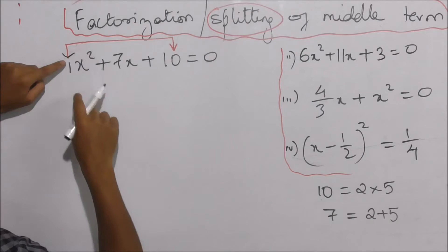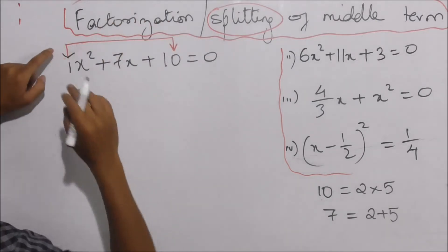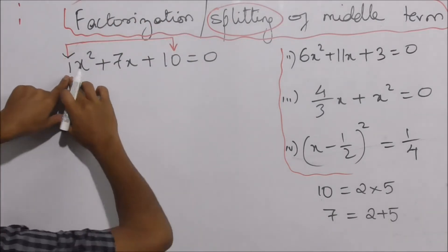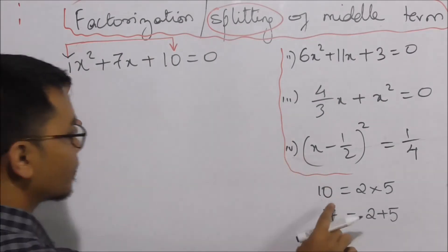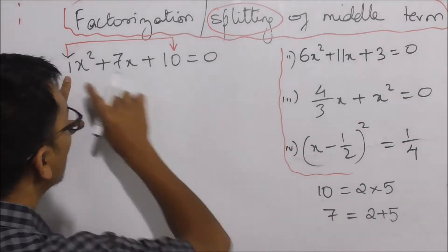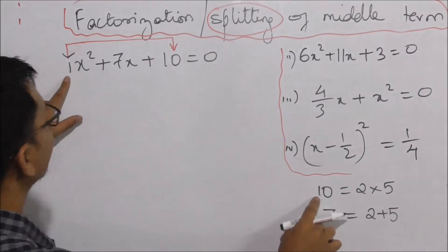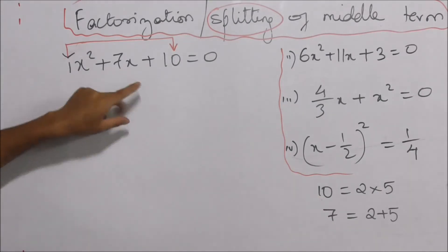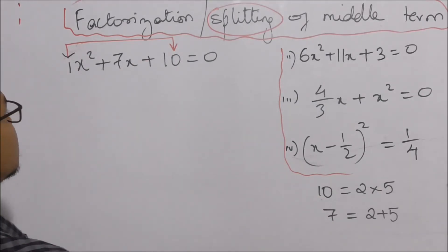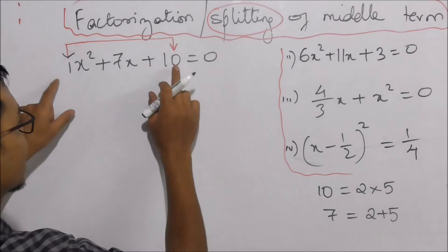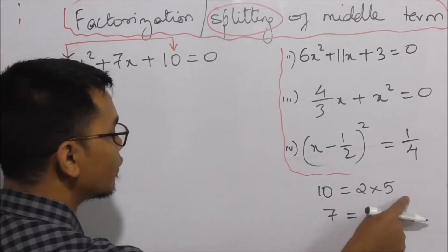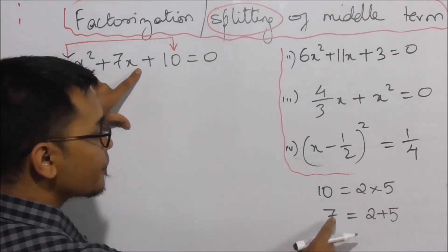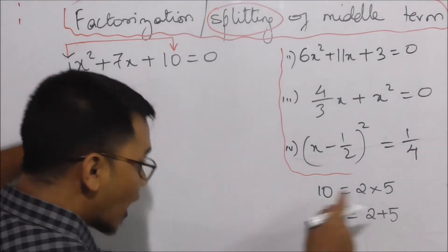You multiply the first term and the last term. 1 into 10 will be equal to 10. If you look at the middle term, 7x, you can split it. You can see the multiplication of 10, and 2 into 5 is 10. This is 7x — 7 is equal to 2 plus 5.